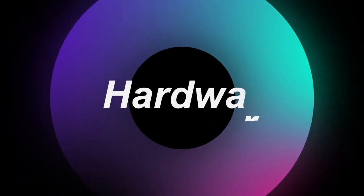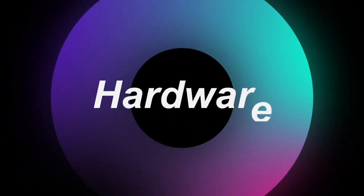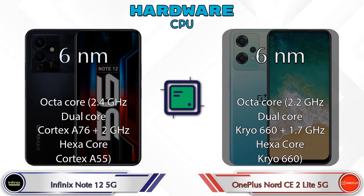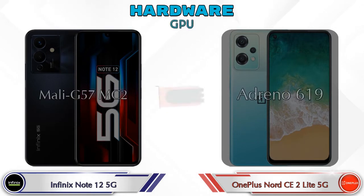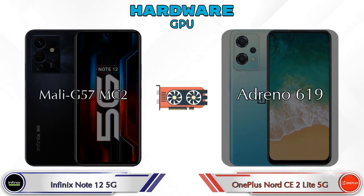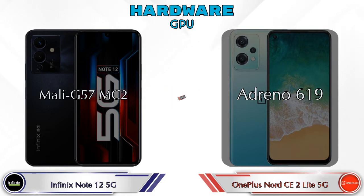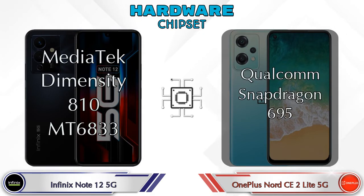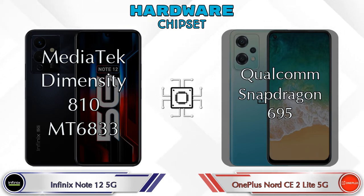First, let's talk about the most important part of the phone — hardware. For CPU and GPU: the Note 12 5G has Mali-G57 MC2 and the CE2 Lite 5G has Adreno 619. For chipset, the Note 12 5G has MediaTek Dimensity T810 (MT6833), while the CE2 Lite 5G has Qualcomm Snapdragon 695.